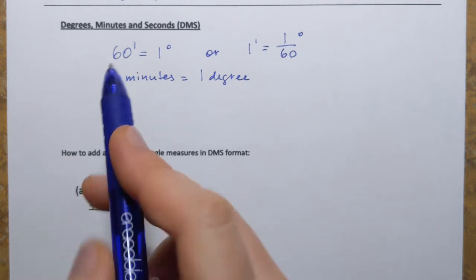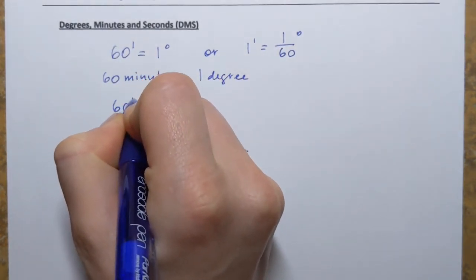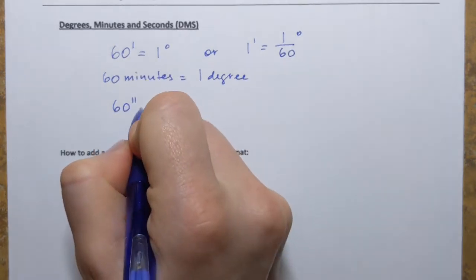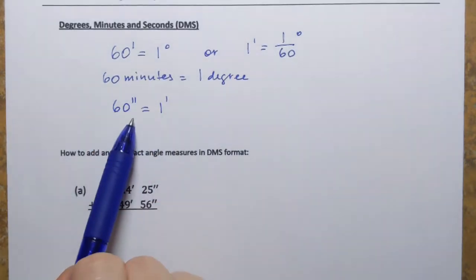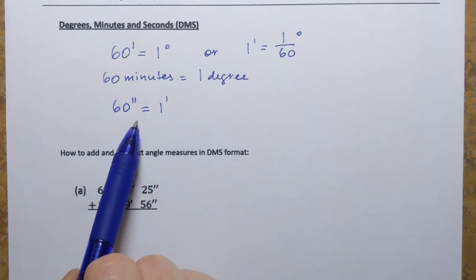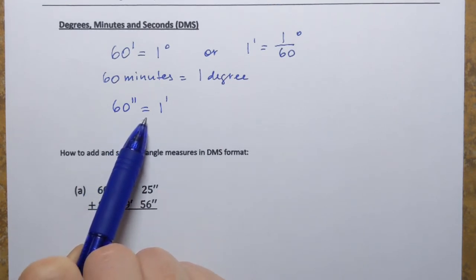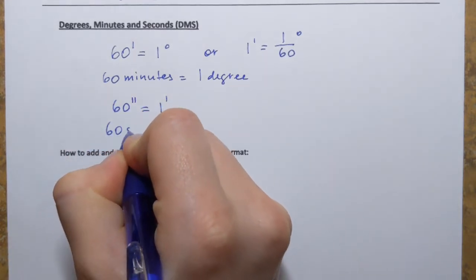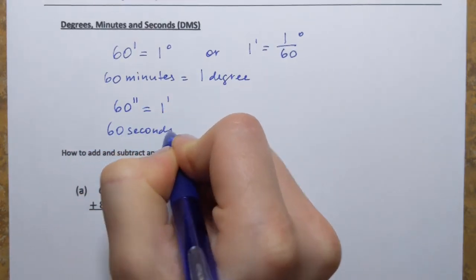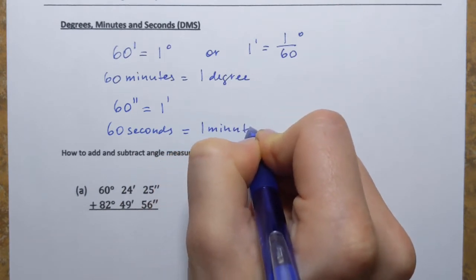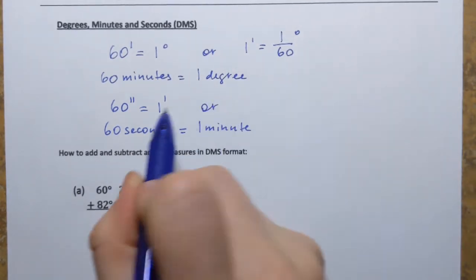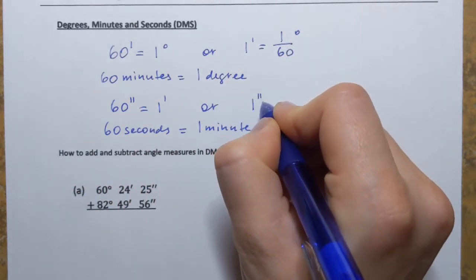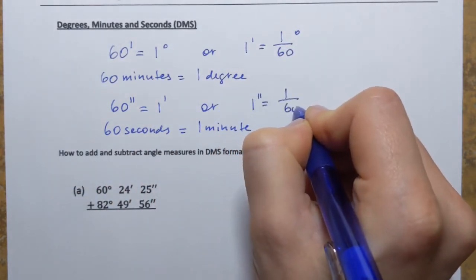Now let's move on to seconds. 60 seconds — we denote seconds by the double prime symbol — equals 1 minute. This sounds very familiar because we use the same units and relation to measure time. Or if we divide both sides by 60, we can say that 1 second is one sixtieth of a minute.